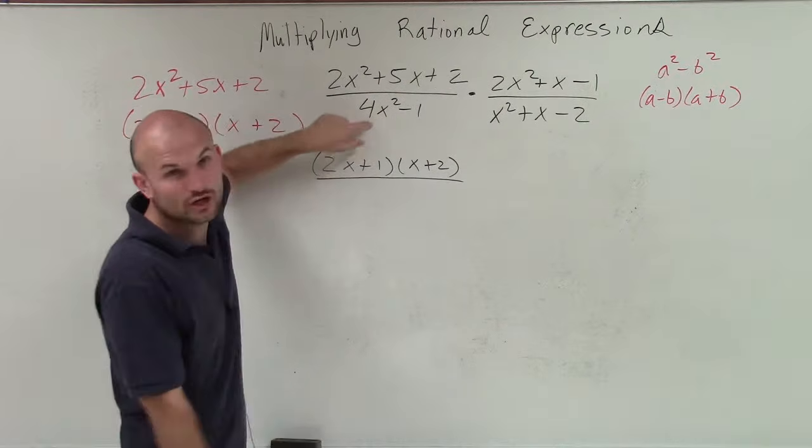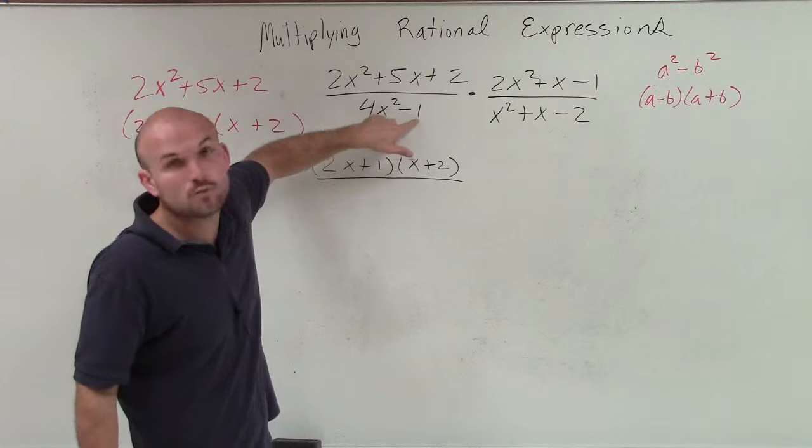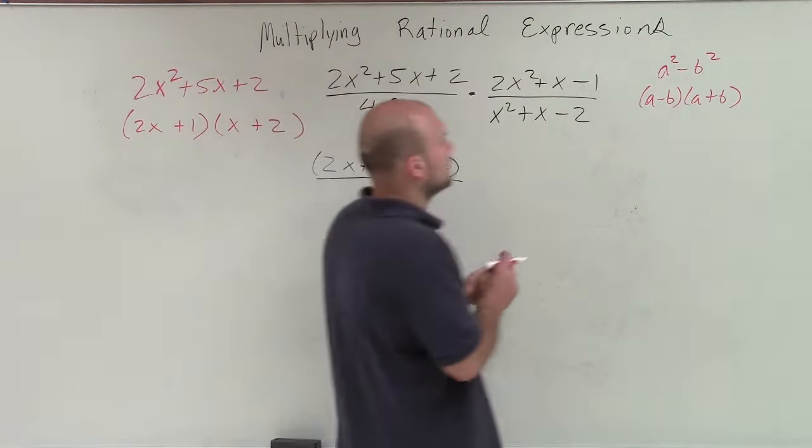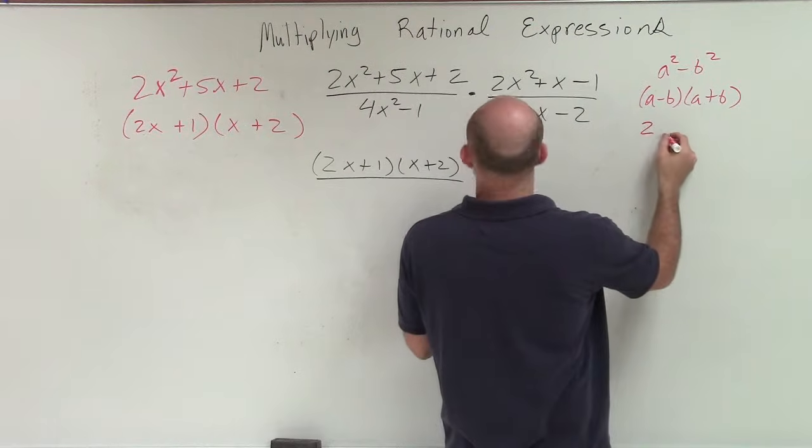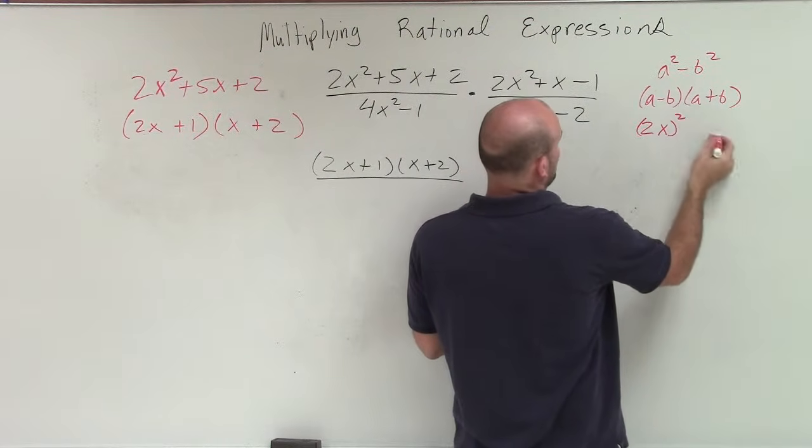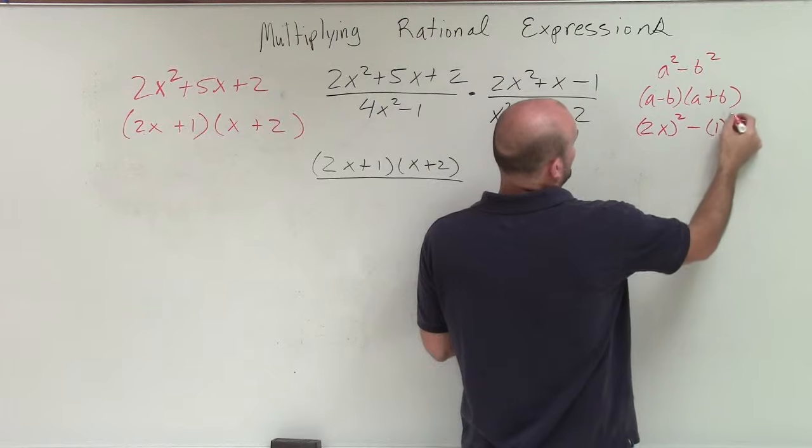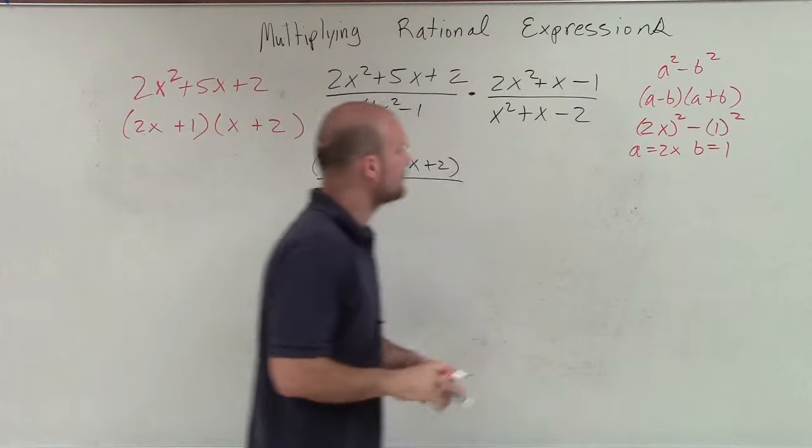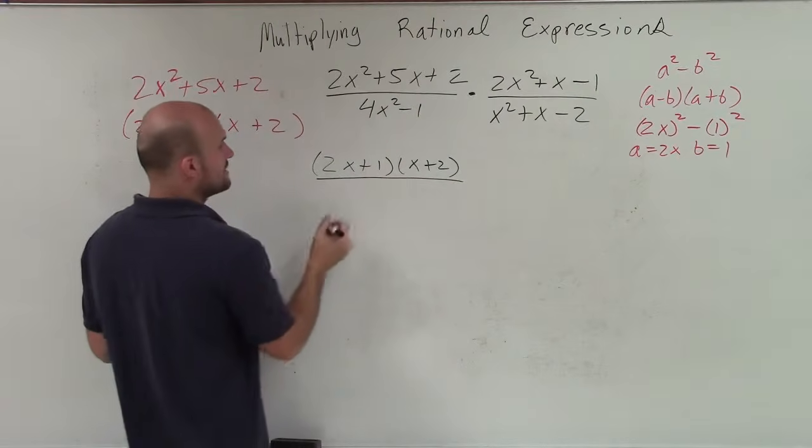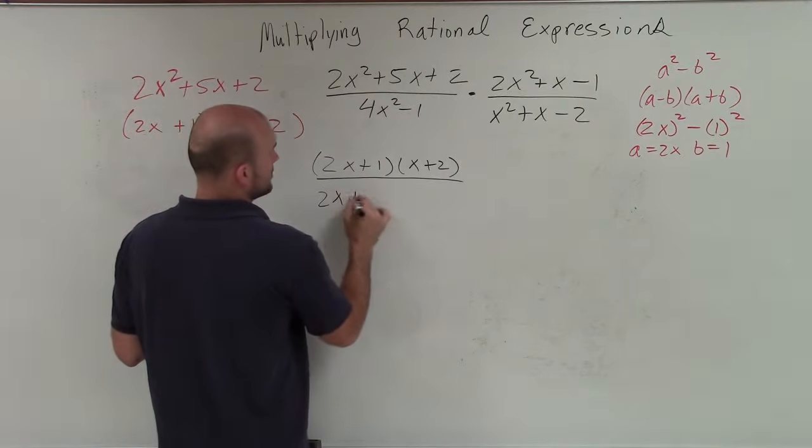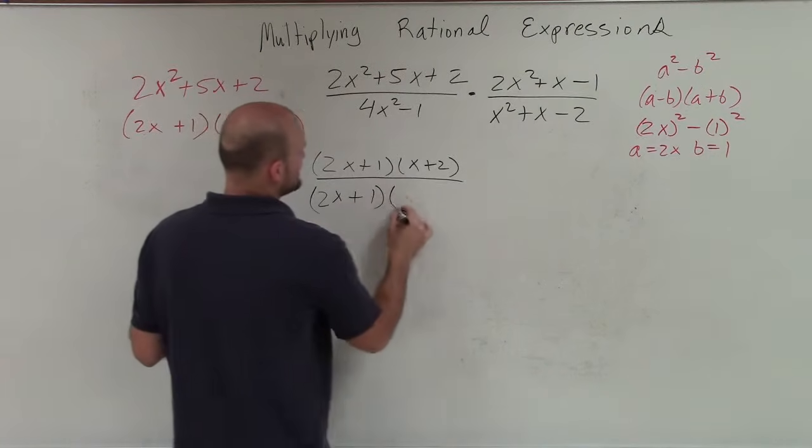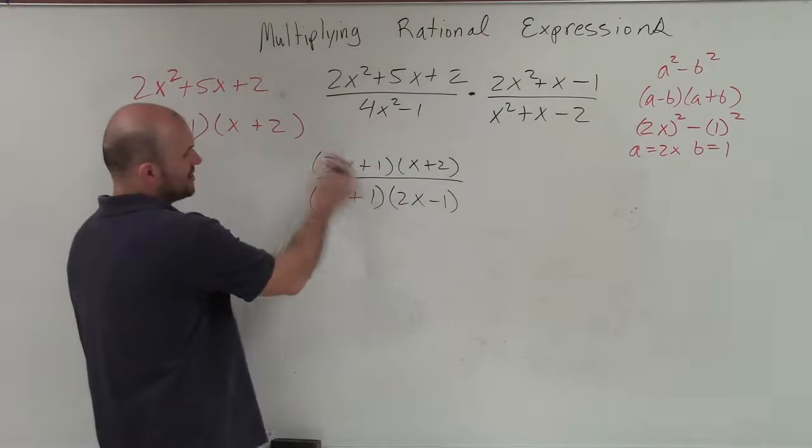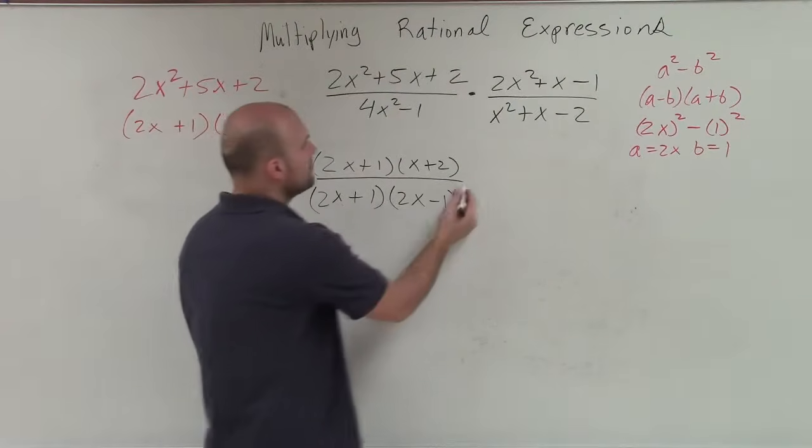So this whole term is a squared term that we can rewrite. And is 1 a squared number? Of course, 1 times 1 squared is 1. So therefore, I could rewrite this as 2x squared minus 1 squared, where a is equal to 2x and b is equal to 1. So therefore, the factored form of this is going to be 2x plus 1 times 2x minus 1. Pretty cool here. And then we already know we're going to be able to divide those out. But let's continue.